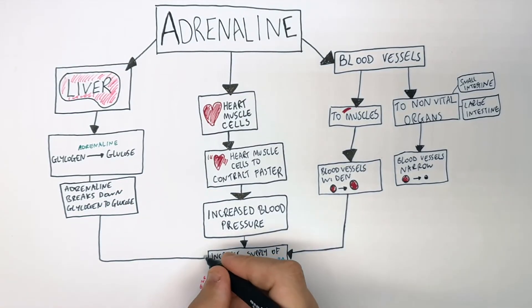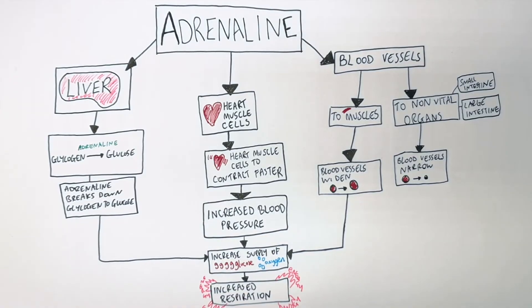This will flood the blood with glucose, therefore increasing the volume of glucose available to react with oxygen for respiring muscle cells.